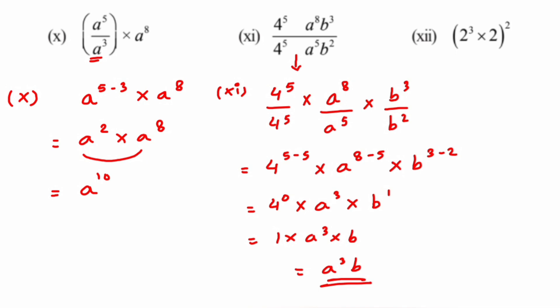Twelfth question: solving the bracket — same base, so add the powers. There's no power written for one of the numbers, so we assume power is 1. Adding 3 plus 1 gives 2 to the power 4. Then power on power: multiply, so 4 into 2 gives 2 to the power 8. With that we've solved all 12 questions, applying different laws throughout.